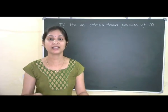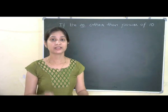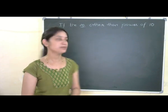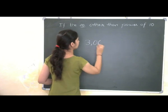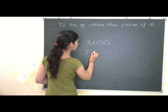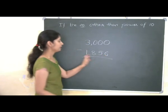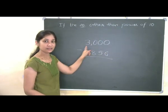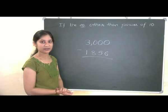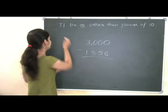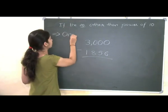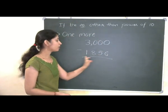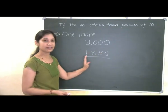Till now we have taken problems where the number of digits in the second value is less than the number of digits in the first value. Let me take one more example: 3000 minus 1856. Here the number of digits in the second value is the same as the total number of digits in the first value. For this, we use one more Vedic mathematical rule called "one more," and we use it combined with all from 9 and last from 10.